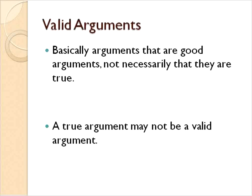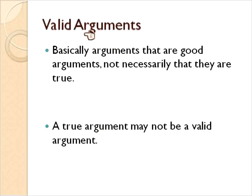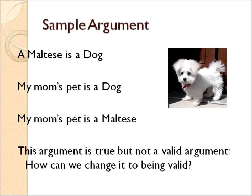The next thing we're going to talk about briefly is valid arguments — basically arguments that are good, solid arguments. Not necessarily that they're right, but that the argument is good. You could also have a true argument that's not valid, or a good argument that's not valid. Here's an example: a Maltese is a dog, my mom's pet is a dog, so my mom's pet is a Maltese.